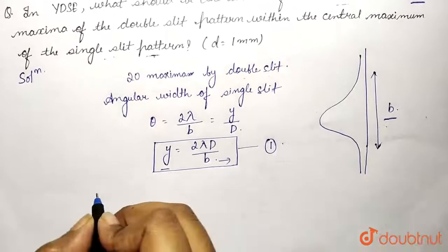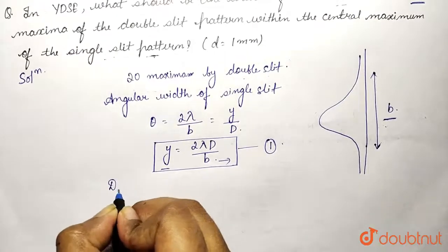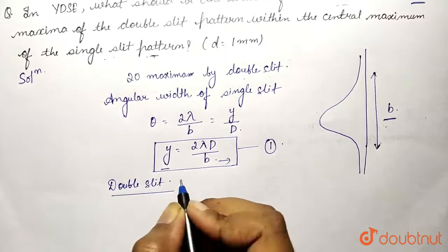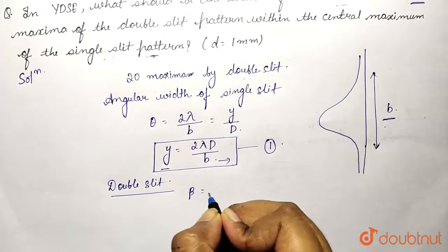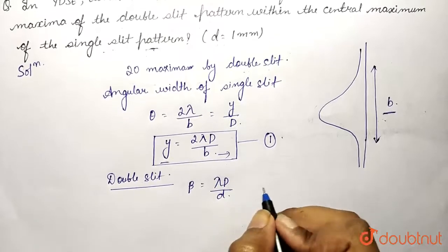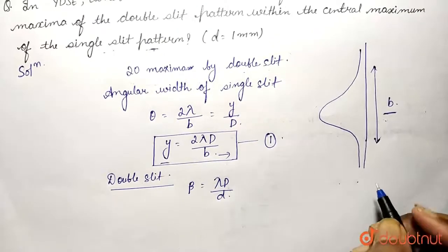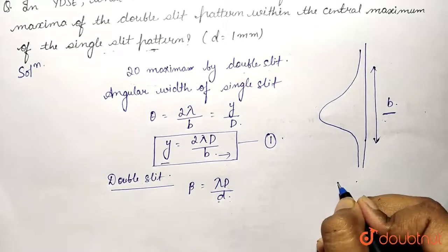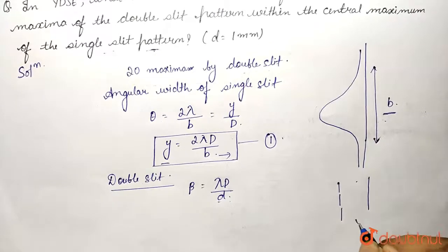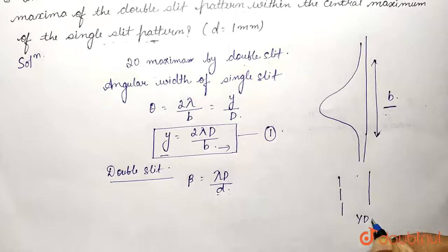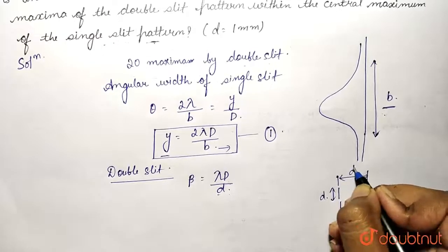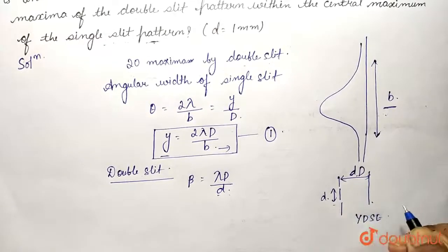Now similarly for double slit, we will find the equation. For double slit, we know that beta (the fringe width) equals λD/d, where capital D is the distance between the screen and the slit, and small d is the distance between the two slits. This is small d and this is capital D — the distance between screen and slit.